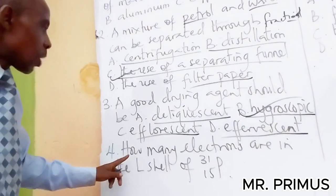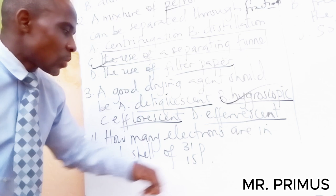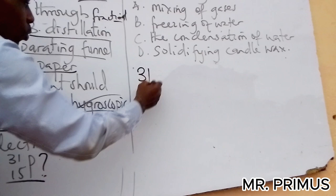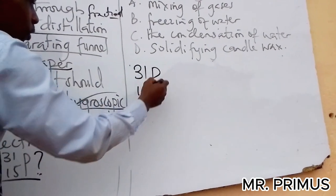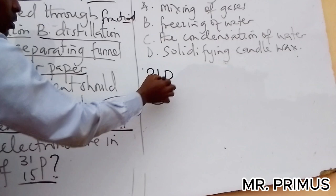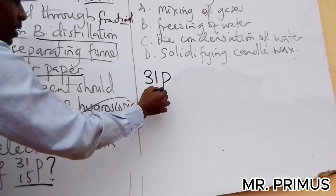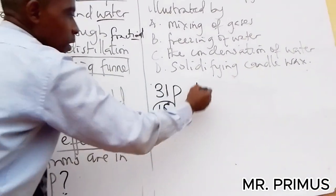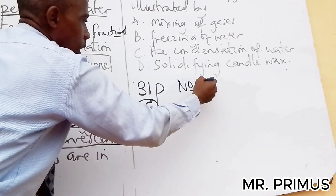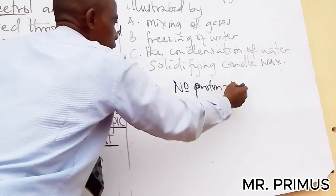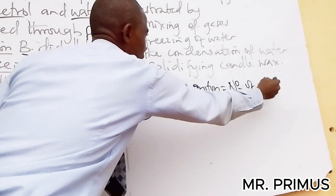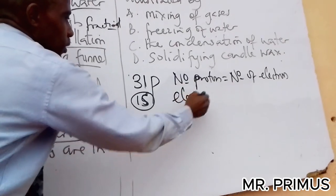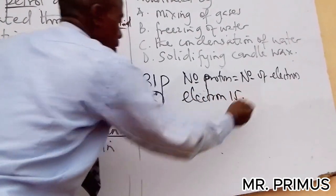How many electrons are in the L shell of phosphorus? We have 31, 15 phosphorus. So when you talk of electrons, you don't look at this mass number, you look at this atomic number, which represents number of protons. Because there's no charge here, the number of protons is equal to the number of electrons. Therefore this is 15 electrons.